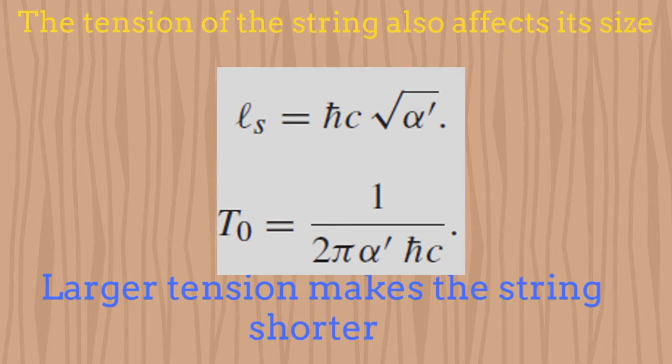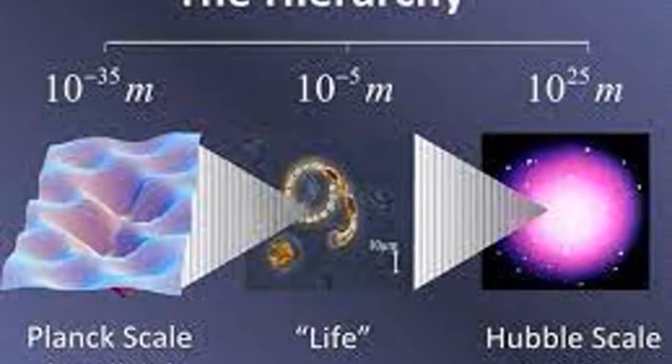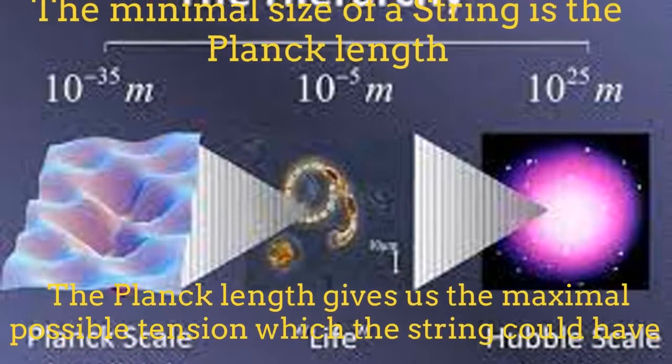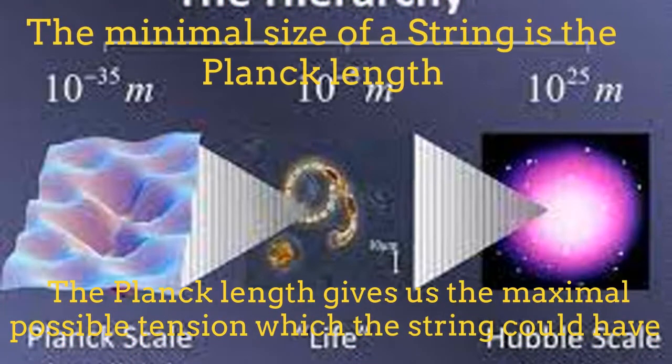The larger the tension of the string is, the shorter will be its size. The strings can have any size. The minimal size which a string could have would be the Planck length, which is the shortest possible scale in physics in agreement with all the formulations of quantum gravity.